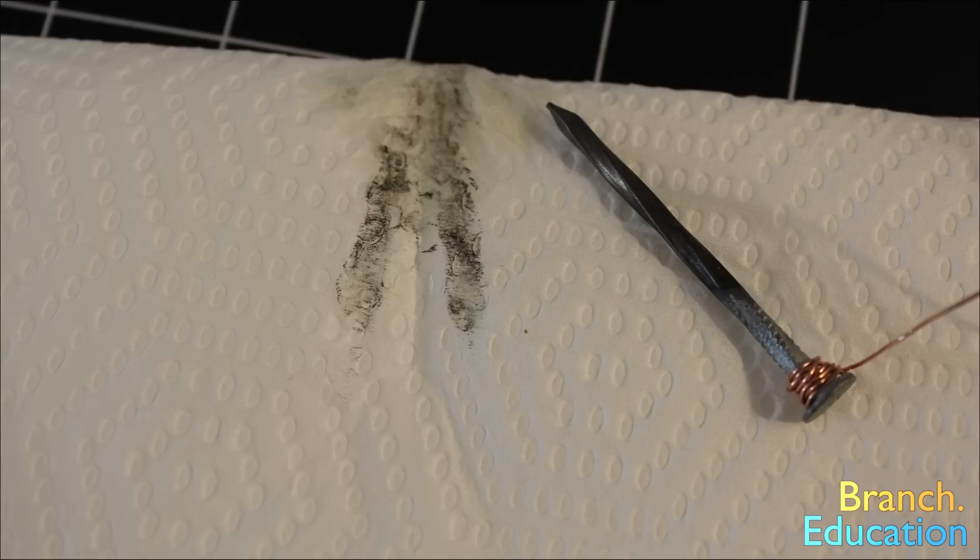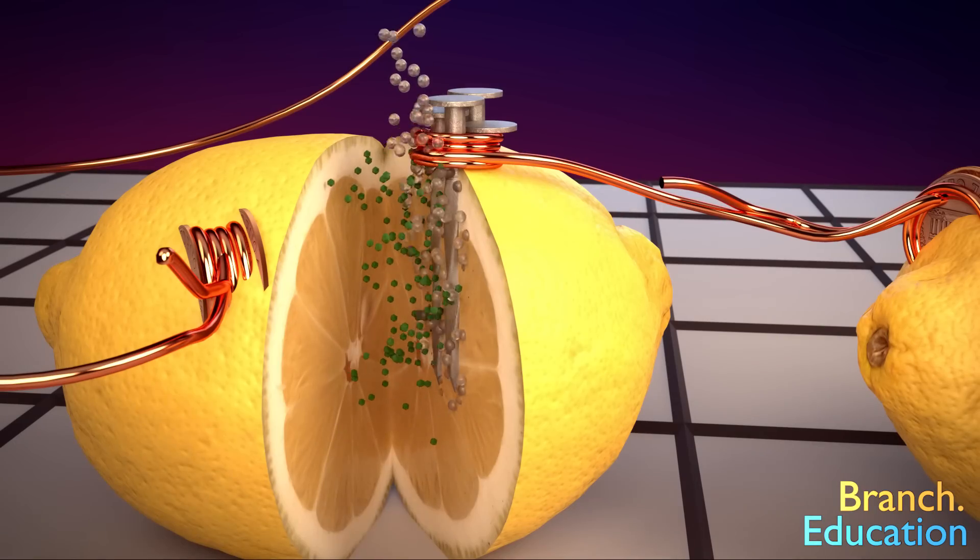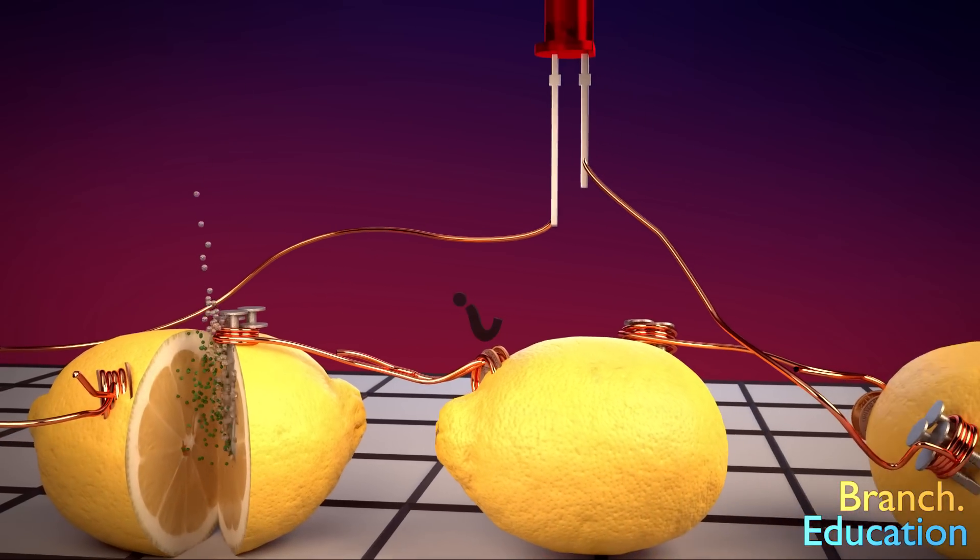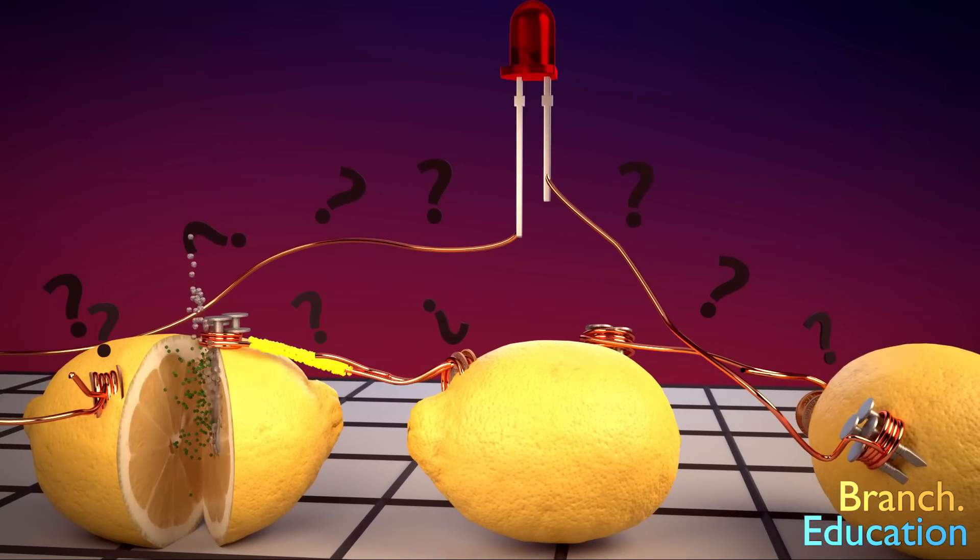This is evidence of the electrons moving from the zinc to the H+ ions in the acidic lemon juice. So then, now that we have a reaction between zinc and hydrogen, what help does the copper wire and pennies provide? And why would electrons take the longer path instead of just interacting with the lemon juice next to the nail?